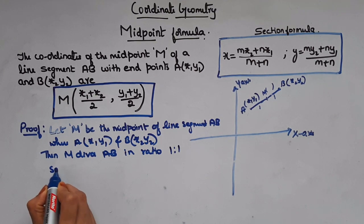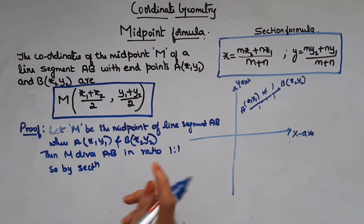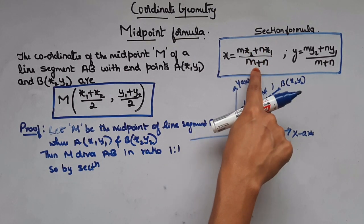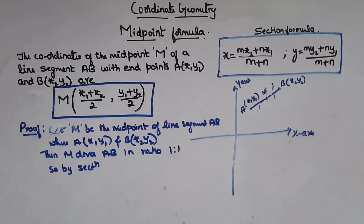So now by section formula, we know section formula is given by x = (mx₂ + nx₁)/(m+n) and y = (my₂ + ny₁)/(m+n).